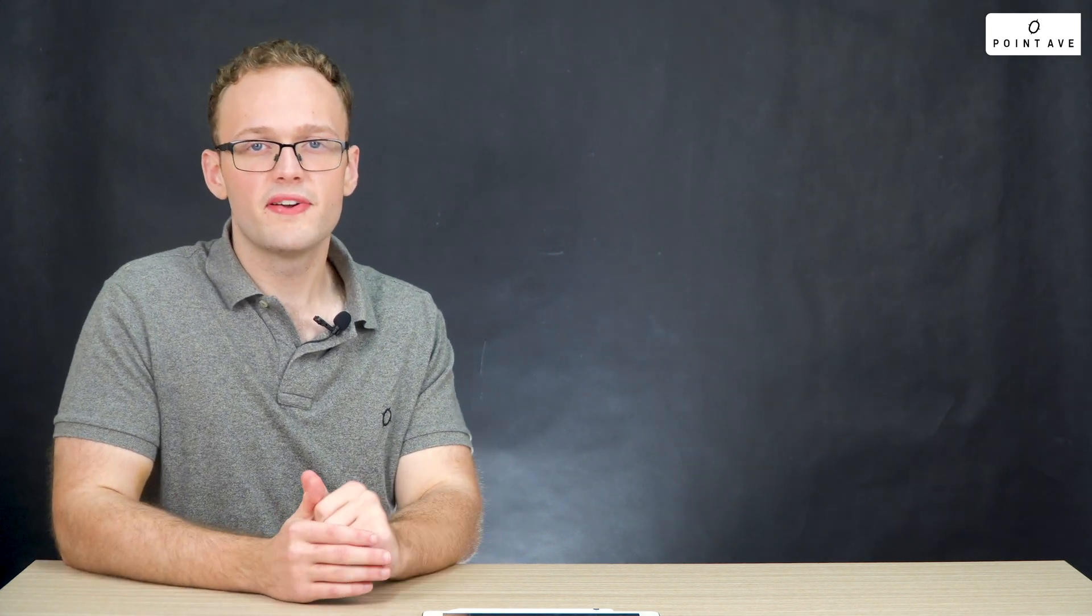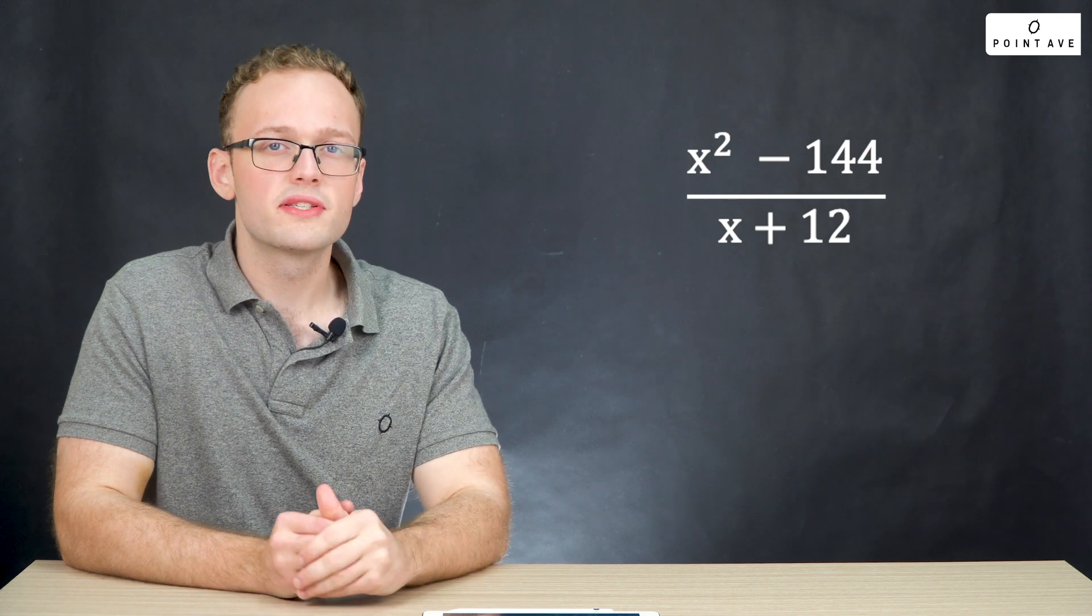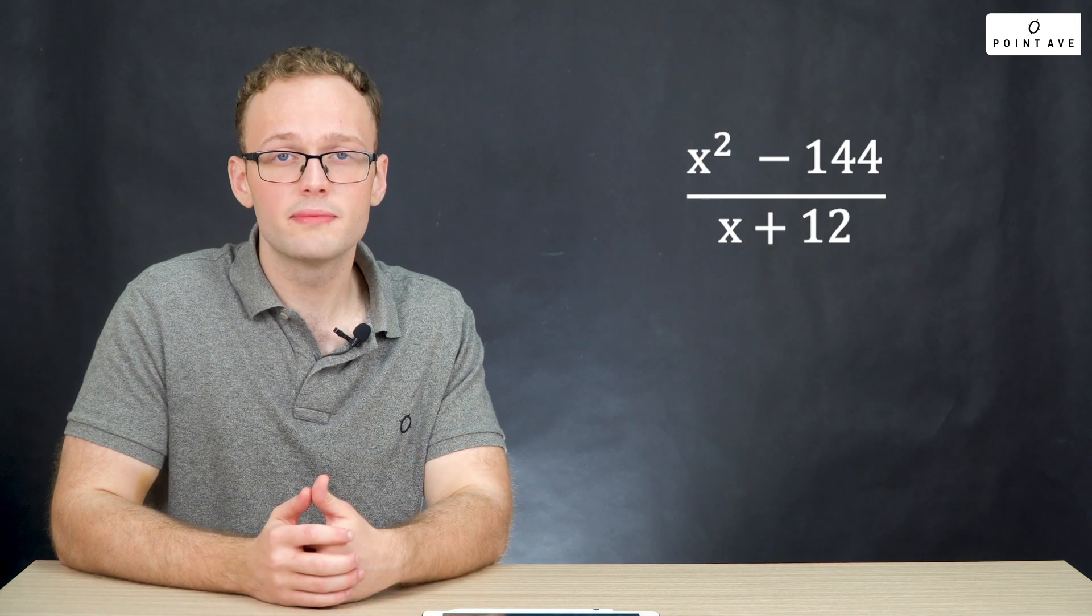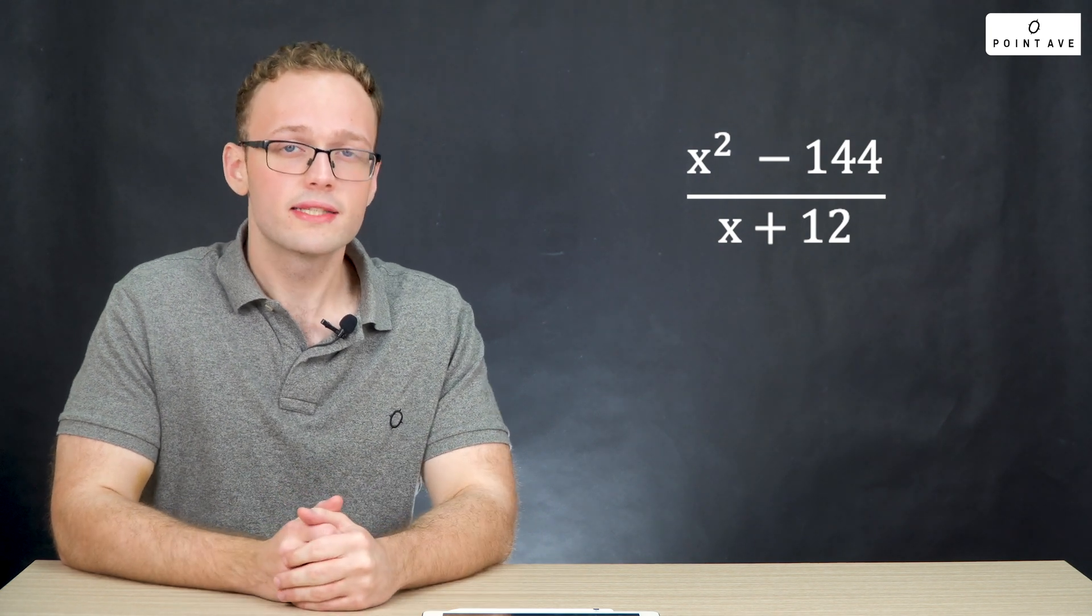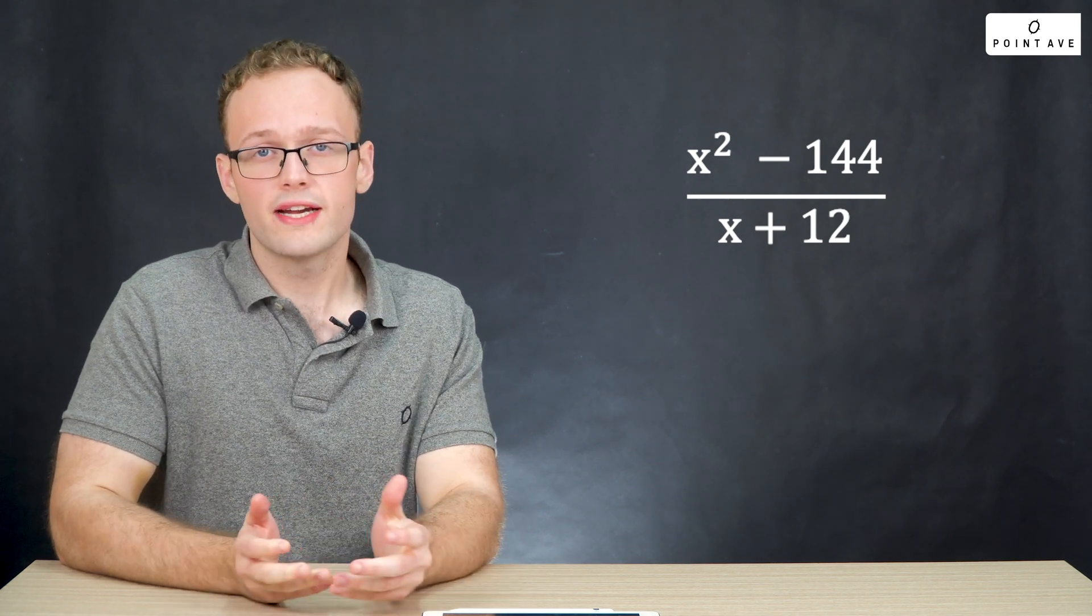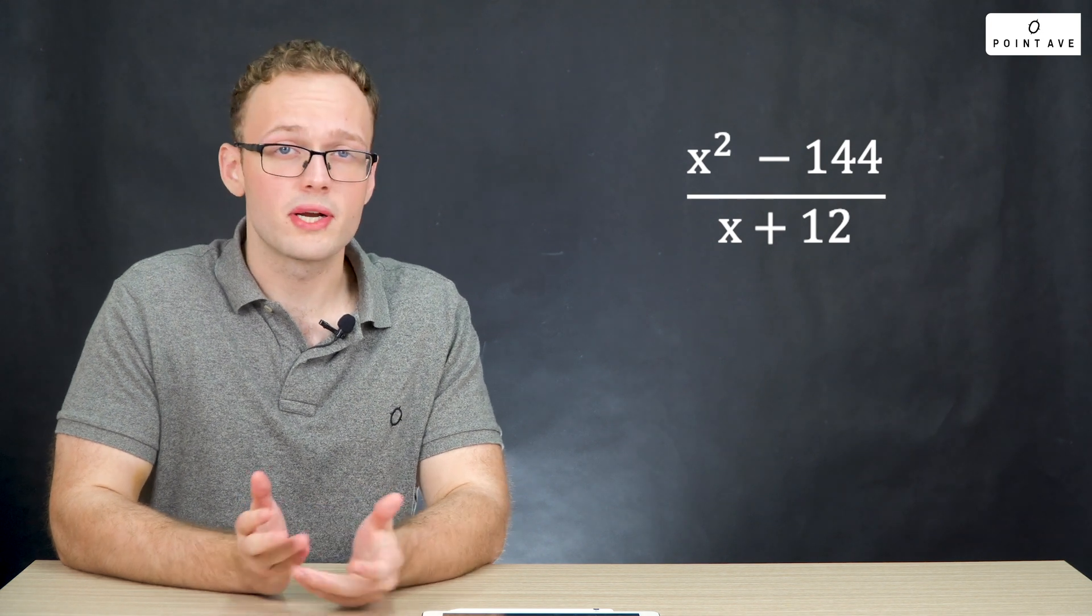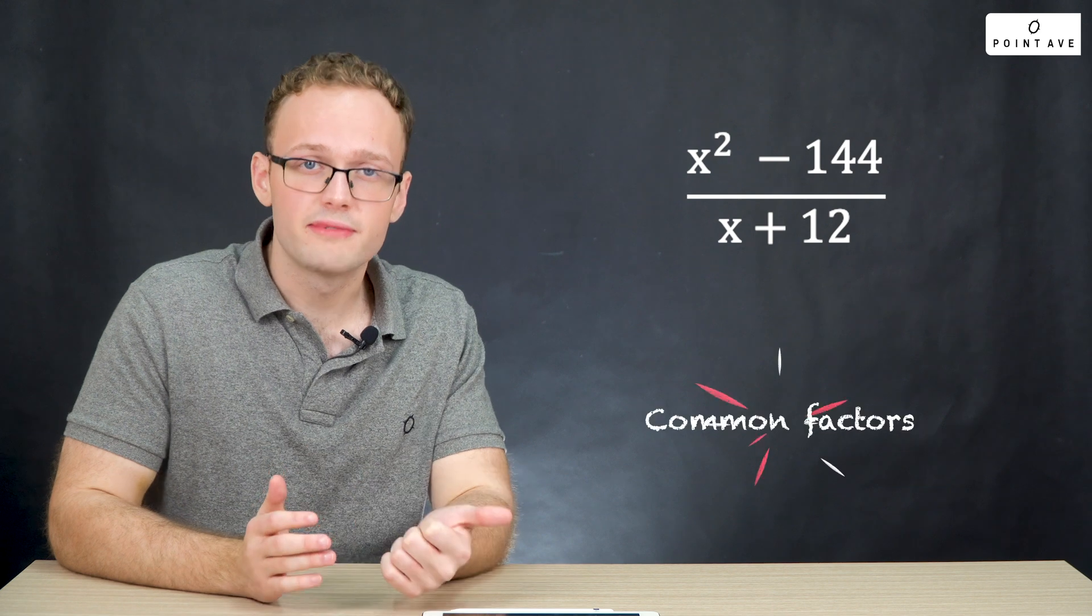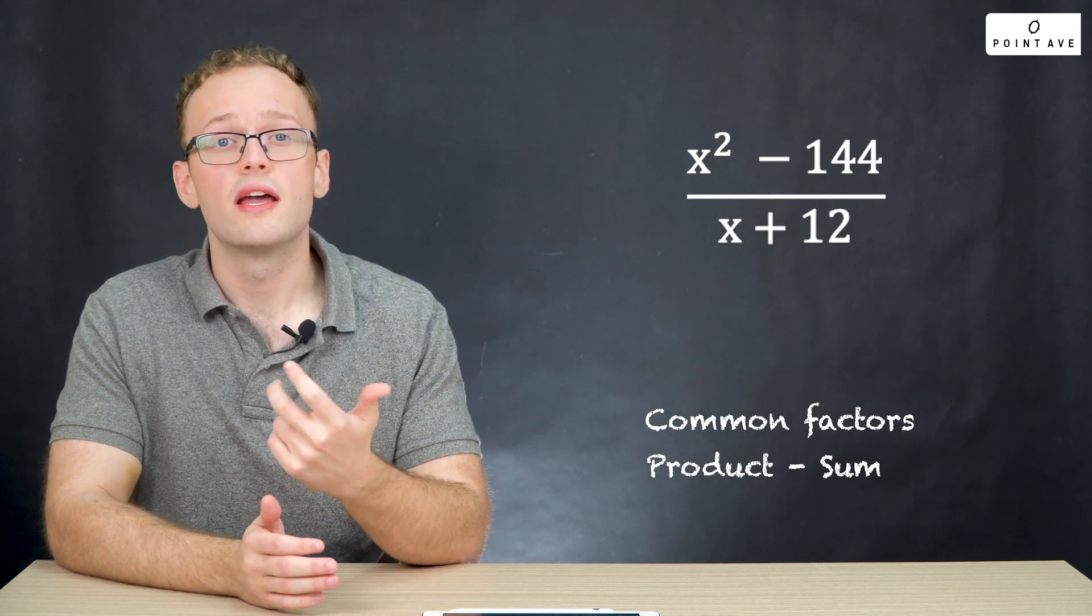Whenever we're trying to simplify a big fraction like this, you want to start by factoring the numerator and the denominator. Then you can find common terms in the top and bottom that will cancel each other out. In this case, our denominator is already factored, so we only need to worry about our numerator. We look at our methods: common factors, product sum, and perfect squares.